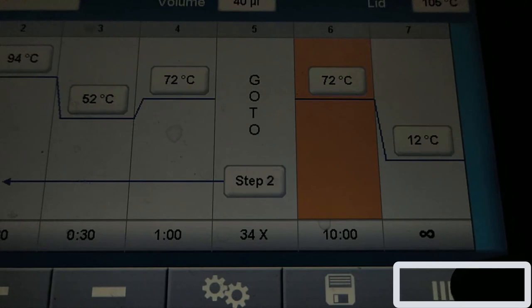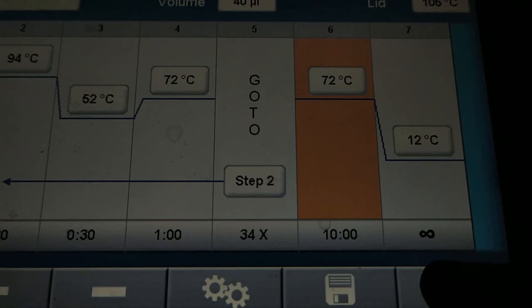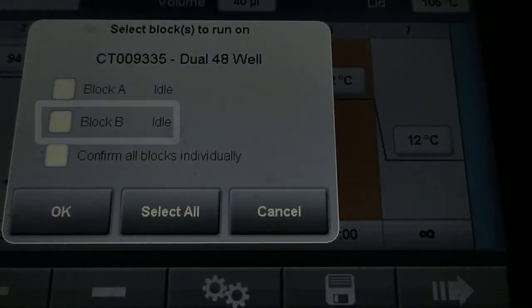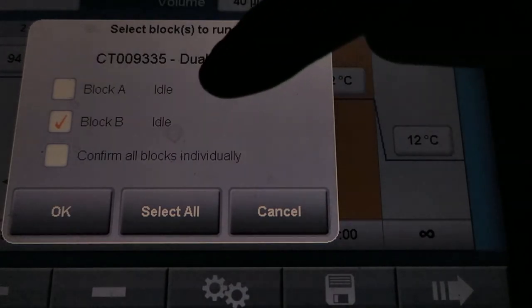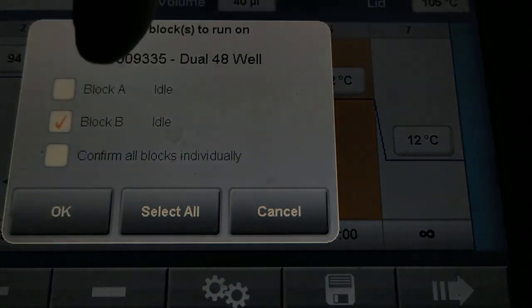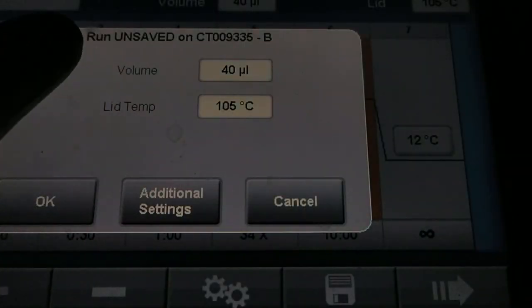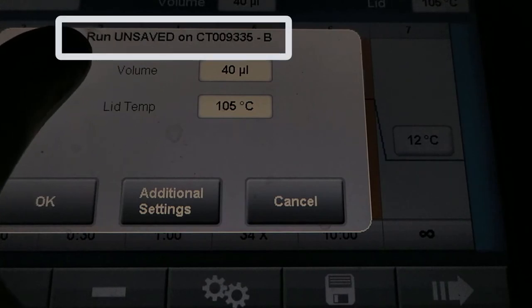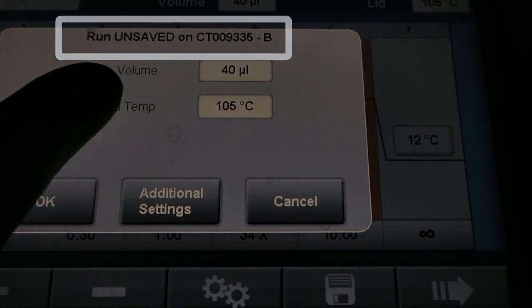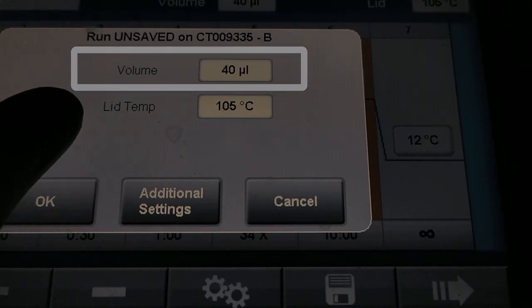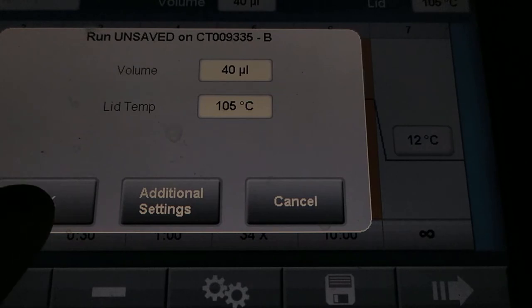Now we are going to start. Now we can press on the run button here. So this arrow here shows the running of the protocol. So just press on it. And on this screen choose the block and we are going to use the block B. After that we have the option to select all. We do not do that. We press on OK. And now you can see that it again asks the running the start of unsaved protocol with the volume of 40 microliters and lid temperature of 105 Celsius degrees. So press OK.